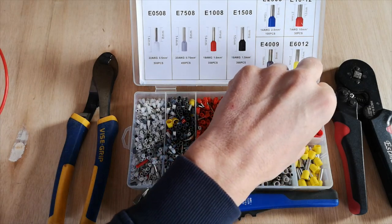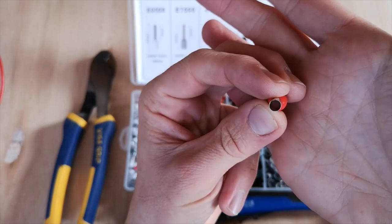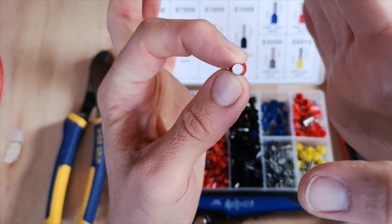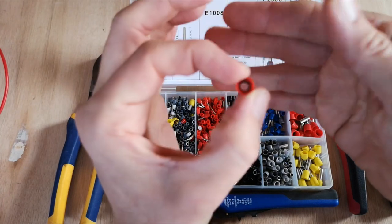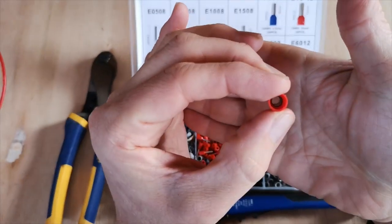As you can see here, the ferrules are a cylinder that the cable is fed within, and all the cable strands are encapsulated within that cylinder when it's crimped down.